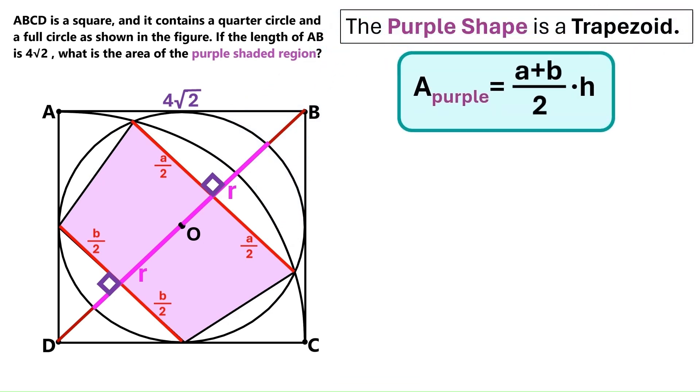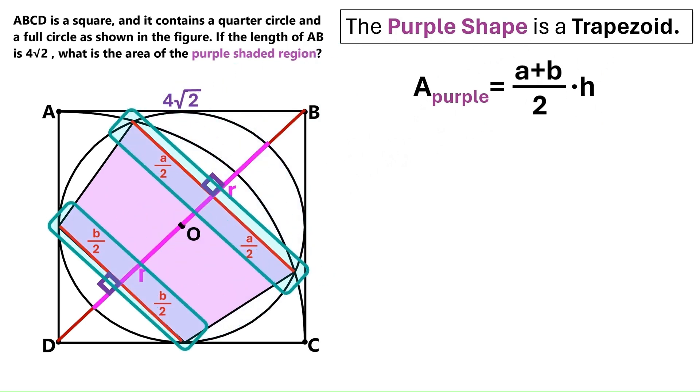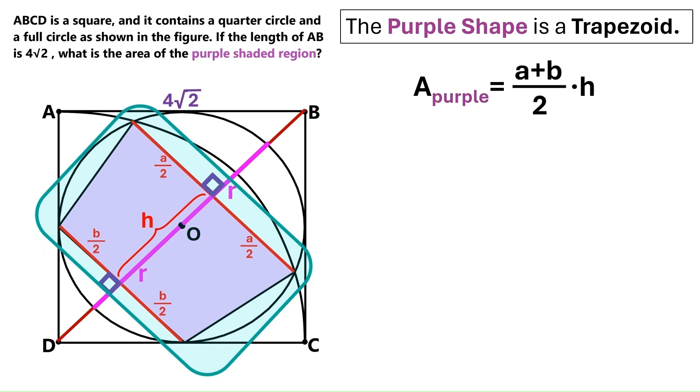Now this is the formula for a trapezoid's area. These two sides are A and B, and this height in the middle is H. We're going to come back to this, but before we do,